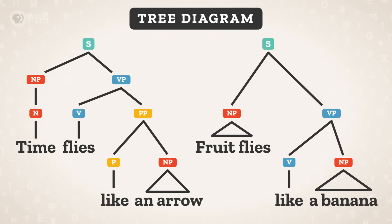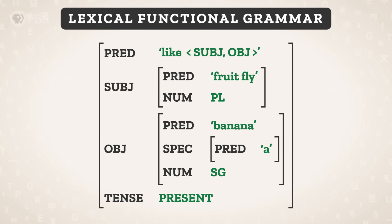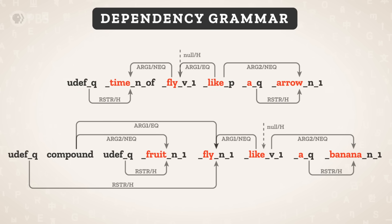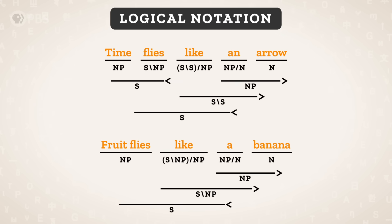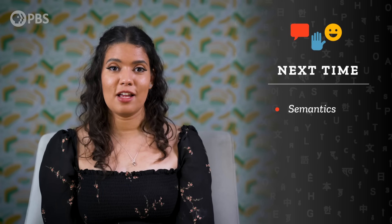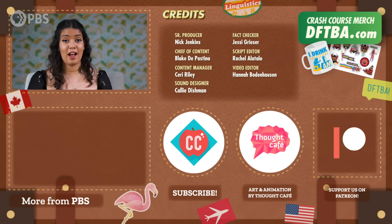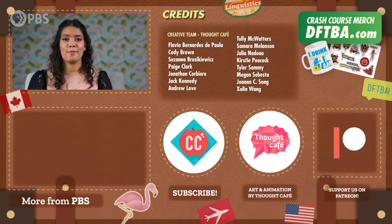Throughout this episode, we've been using rules and tree diagrams as a fairly simple way of representing the structure of sentences. But there are lots of other ways of representing the same sentences. There are many theories of syntax which have different ways of representing grammatical structures, each with their advantages and limitations. And there are some grammatical structures that syntacticians haven't even figured out how to represent yet. Next time on Crash Course Linguistics, we'll go deeper into meaning itself. Thanks for watching this episode of Crash Course Linguistics. If you want to help keep Crash Course free for everybody forever, you can join our community on Patreon.